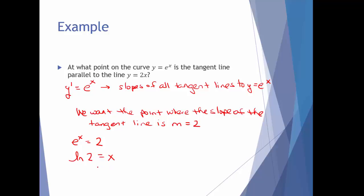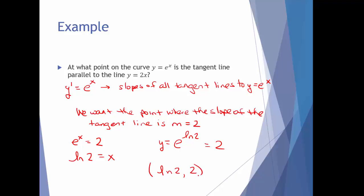So the natural log of 2 is my x coordinate. Keep in mind we're looking for a point, so don't stop here — you also need a y value. Plug into y equals e to the x, the original function. That's e to the natural log of 2 — the e and the natural log cancel and we just get 2. So the point where the tangent line is parallel to y equals 2x has x coordinate natural log of 2 and y coordinate 2. You do not want a decimal approximation for this answer.